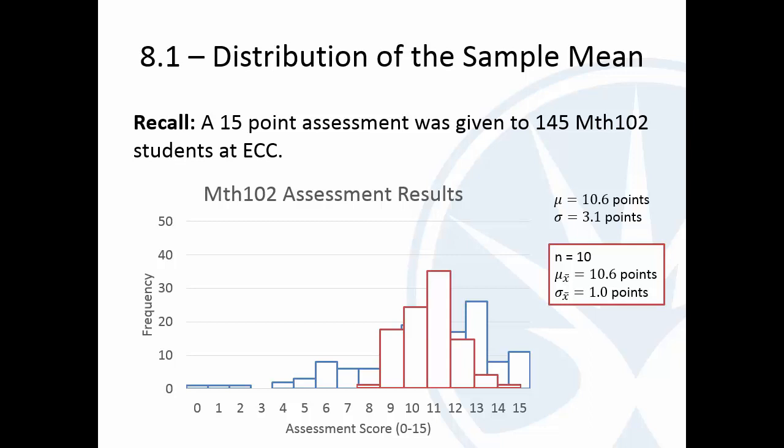If we overlay that with the distribution of sample means of size 10, I think this was like 100 samples of size 10. Notice that the sample means aren't as spread out, because these values, the 0, 1, and 2, are mitigated by some of these higher values. So the sample means are more evenly distributed, or more condensed here.